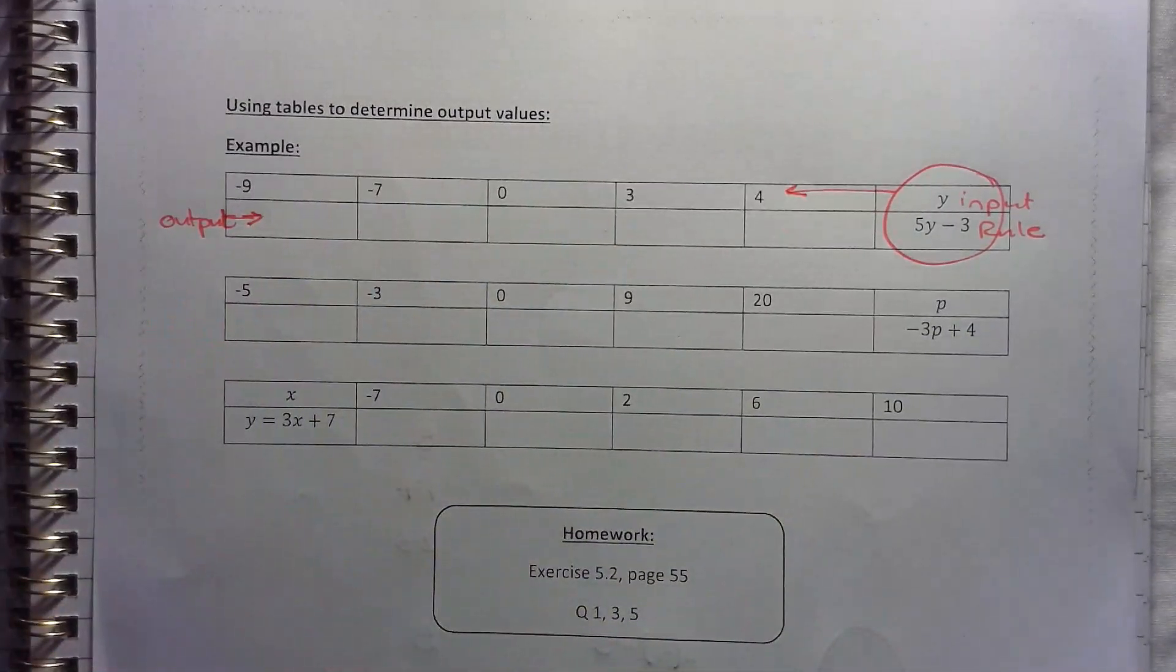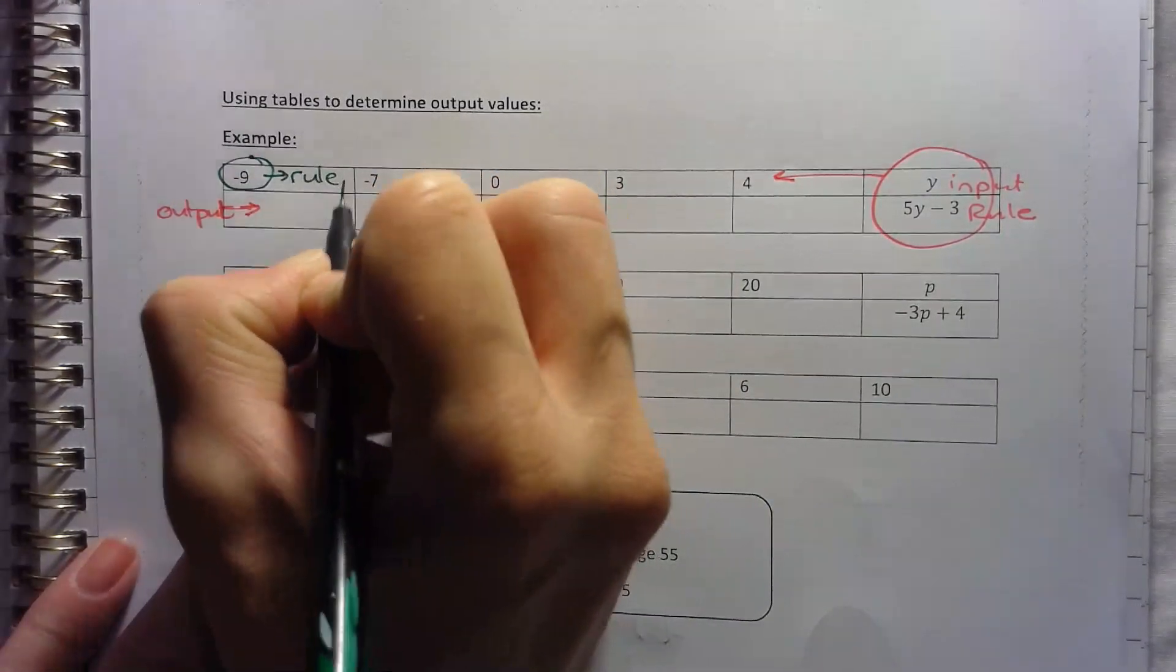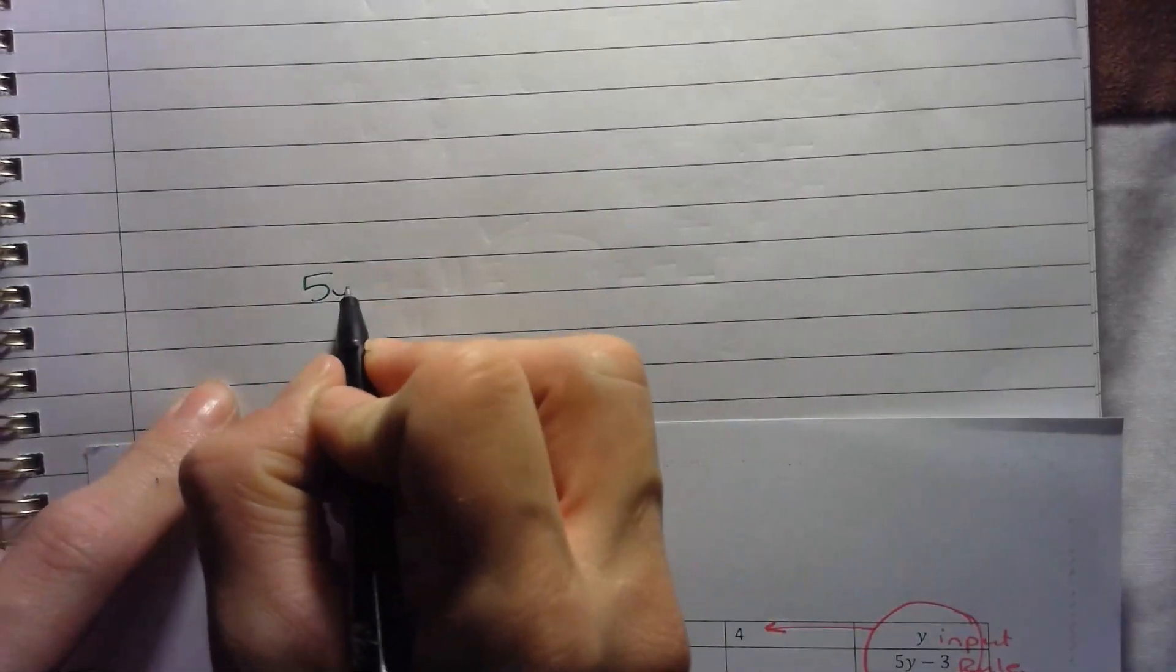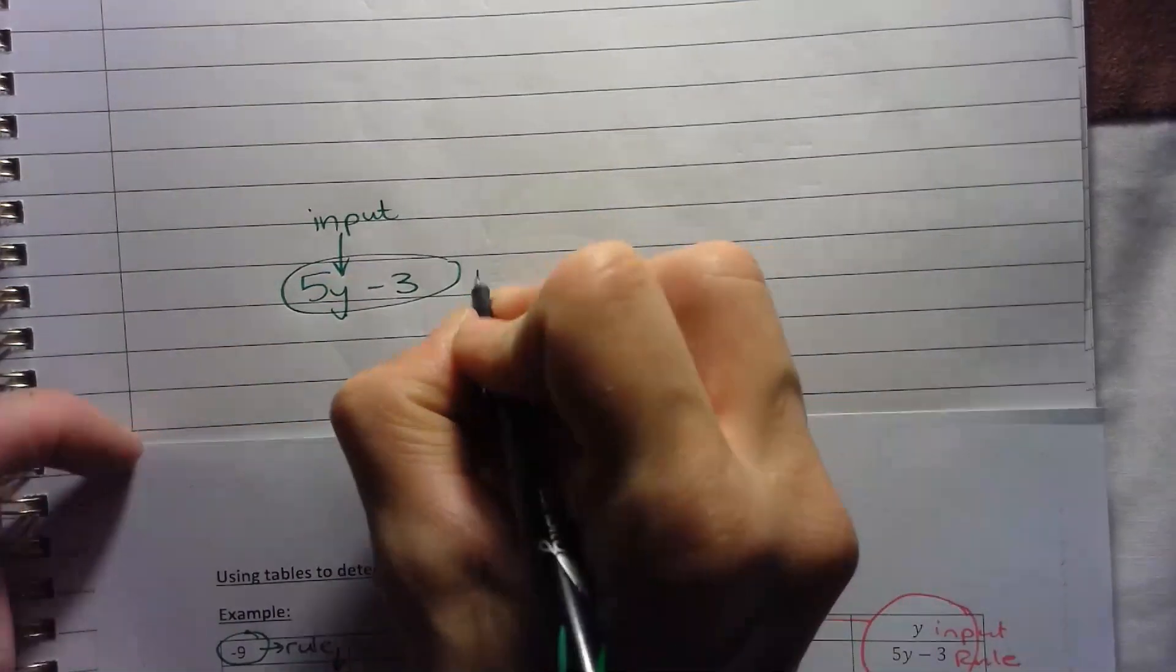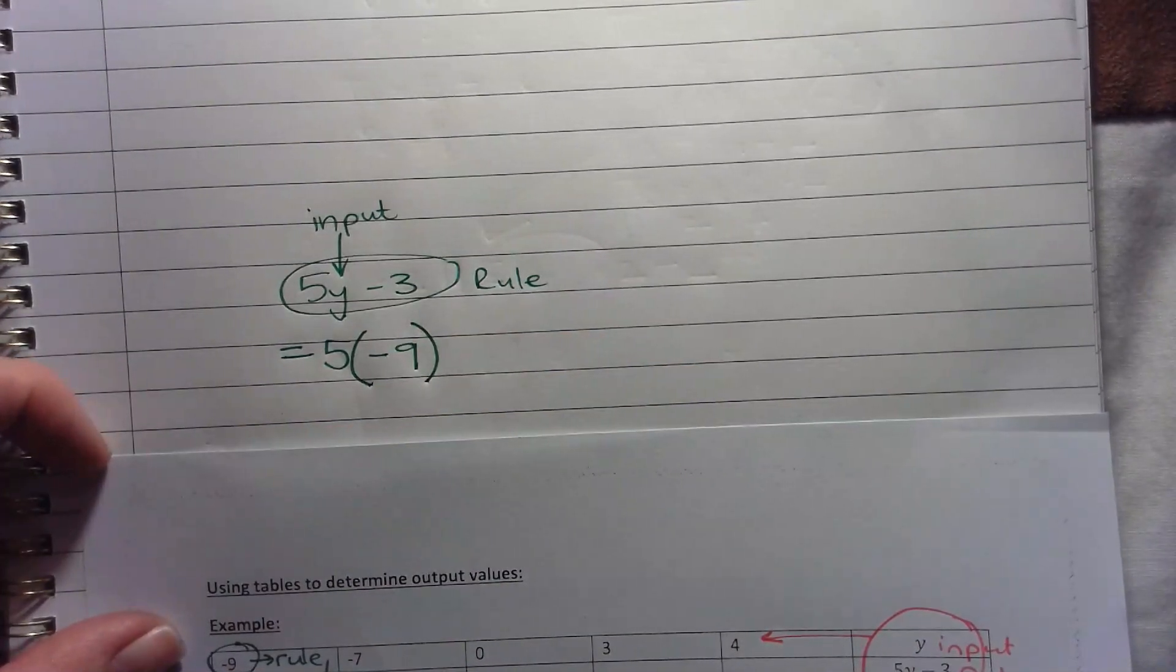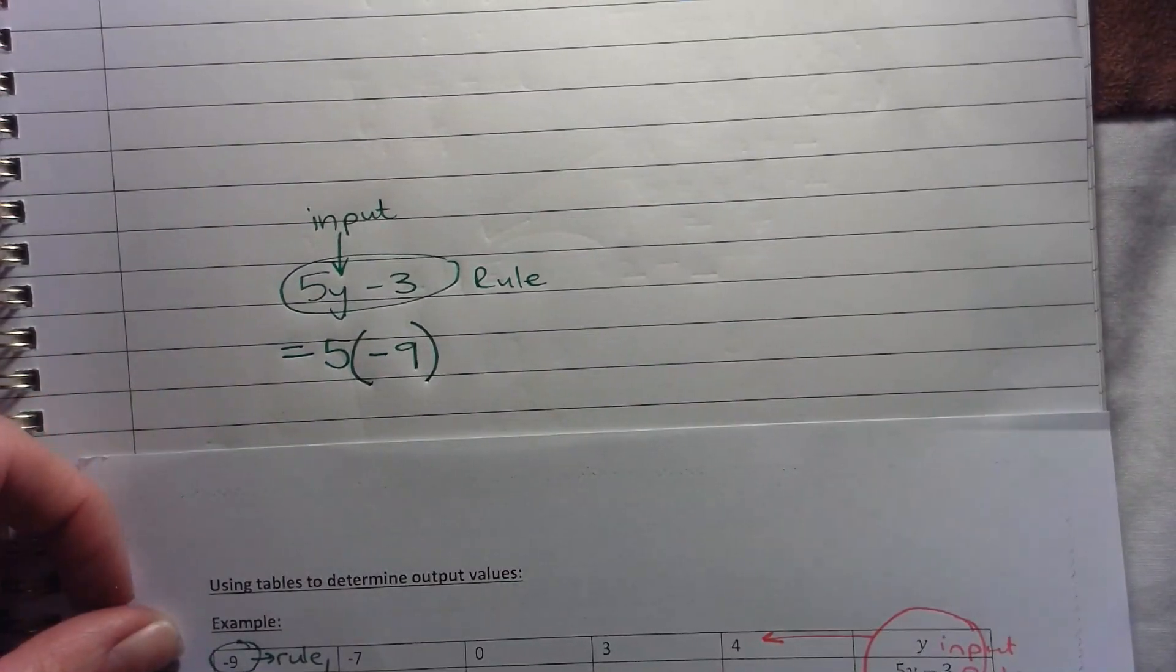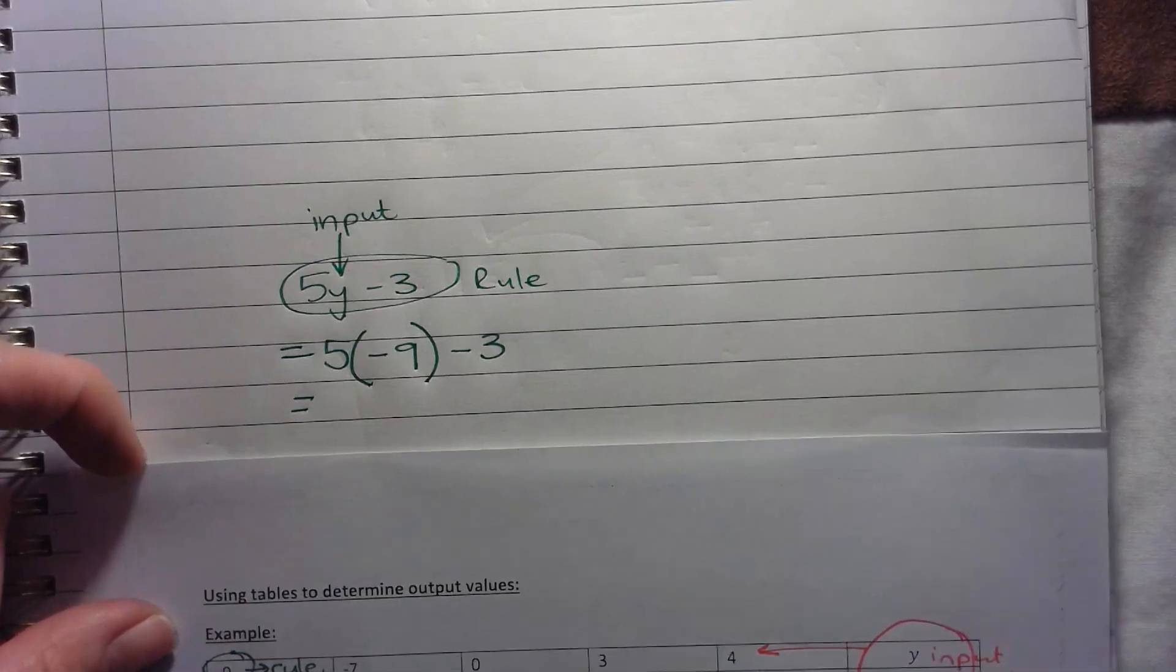So what's happening is I'm going to put negative 9 into my rule, and I'm going to get an output value. So if you need some extra paper, have it on the side, you can then say my rule is 5y minus 3. Y is representing the input number. This whole thing is representing the rule. And we try to find out what the answer will be. So 5 times by negative 9. So instead of using a box now, let's use a bracket. So instead of the y, you're going to put a bracket with the input in minus 3. And when you ask, do you have to put the bracket? Yes, you do have to put the bracket. Otherwise, it looks like 5 subtracting 9 instead of 5 times by negative 9.